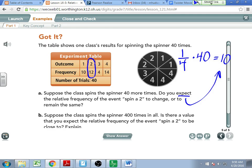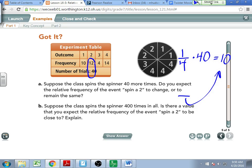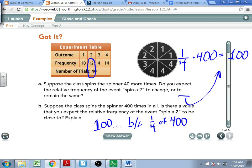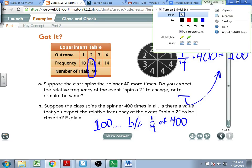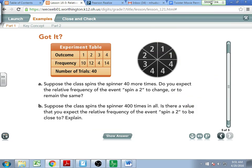Suppose the class spins the spinner 400 times. Is there a value that you expect the relative frequency of the event spin a two to be close to? So if we did it 400 times, I can do the same exact math except change my 40 to a 400. What's a fourth of 400? We would expect my two to happen 100 times, because one fourth of 400. We will wrap there today, so on Friday we will have to pick up and finish the back of this for sure, and then we'll move on and see what all we get done. Have a great day guys, enjoy not having a test. Yeah, I will post both homework so it's accessible to you guys.